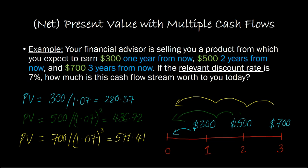So if somebody asks us what is the present value, or how much is this cash flow stream worth today: the $300 is only worth $280.37 today, the $500 is only worth $436.72, and the $700 is only worth $571.41. In present value terms, this entire cash flow stream is worth the sum of these three numbers, which is approximately $1,288.50.